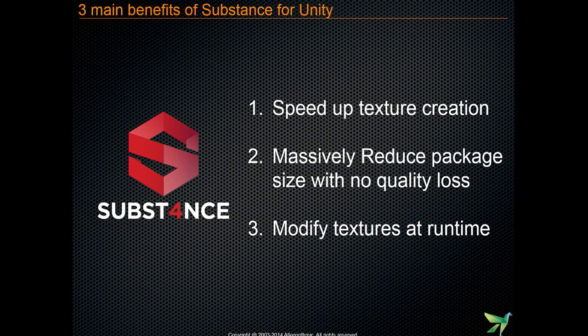One of the biggest advantages of the Substance format is that it can be parametric. If you make sure that you don't embed any huge bitmaps, you end up with a very small package. So if you have a game with thousands of textures, instead of downloading gigabytes, you download something much smaller in megabytes, and then generate the bitmap textures on the device — at install time, load time, or even runtime. That helps distributing games faster.